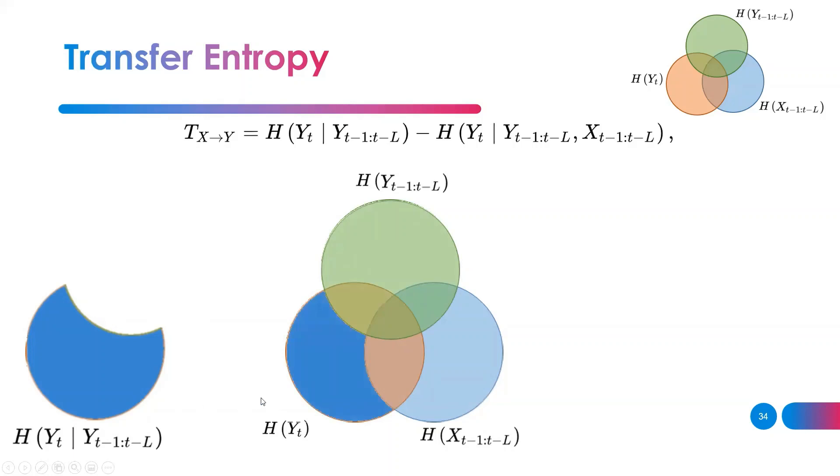Put a blue region over there. That's the remaining uncertainty about Y_t after knowing its own past and the past of another variable X.